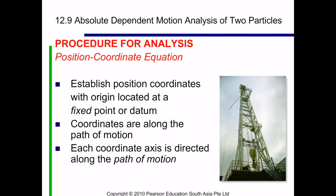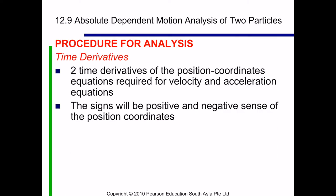In terms of procedure of analysis, first we establish position coordinates with origin located at a fixed point or datum. The coordinates are along the path of motion and each coordinate axis is directed along the path of motion. Two time derivatives of the position coordinates equation are required for velocity and acceleration equations, and the sign will be positive and negative sense of the position coordinates.